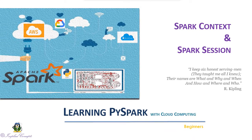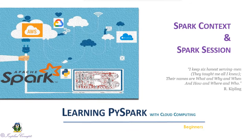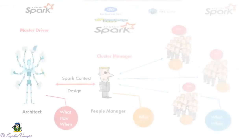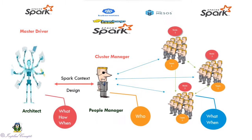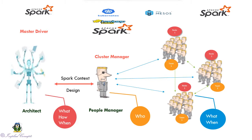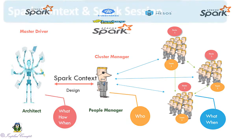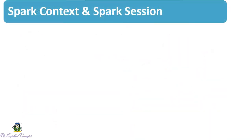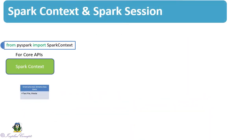We saw before that Spark Context is the single point of entry for all Spark functionality. The driver connects to clusters via Resource Manager via Spark Context. From a data perspective, Spark Context provides APIs to access unstructured, schema-less data like text files. To work with RDD operations, it is essential to work with well-structured, schematic tabular data as well.